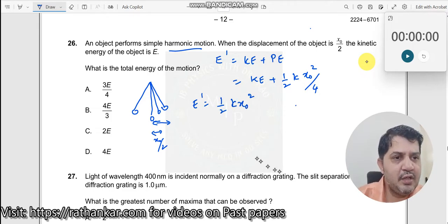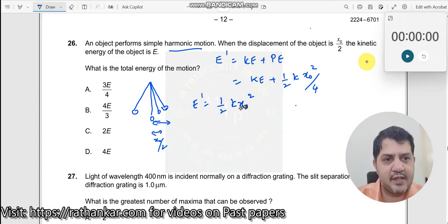How do I know this? When the particle comes to the extreme position, all its kinetic energy is lost and it has only potential energy. So kinetic energy becomes zero here. Therefore it only has potential energy which is half k x₀².